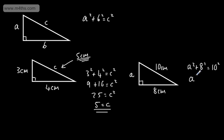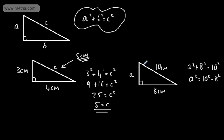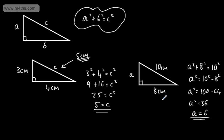I can write that A squared equals 10 squared minus 8 squared. You can jump straight to this step if you prefer — you can simply say 10 squared minus 8 squared equals A squared. So A squared equals 100 minus 64, which gives A squared equals 36. Taking the square root of both sides, A equals 6. This length is 6 centimetres.